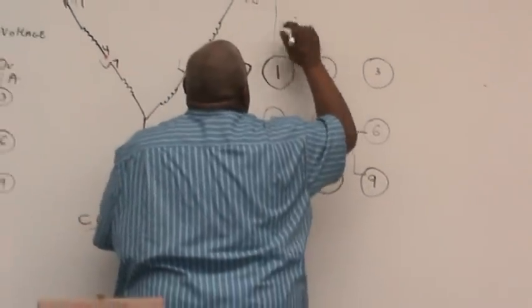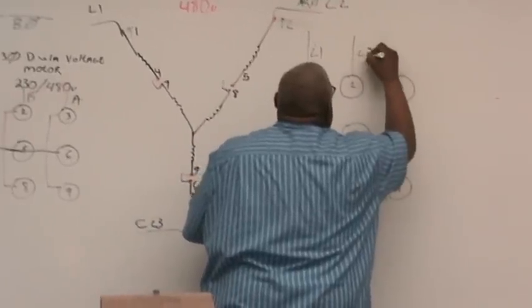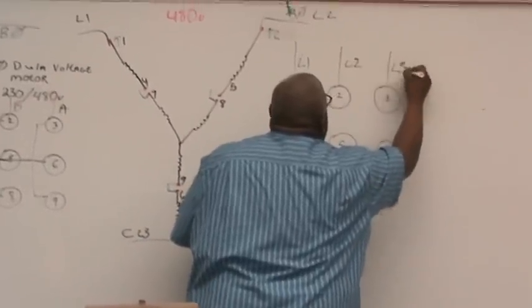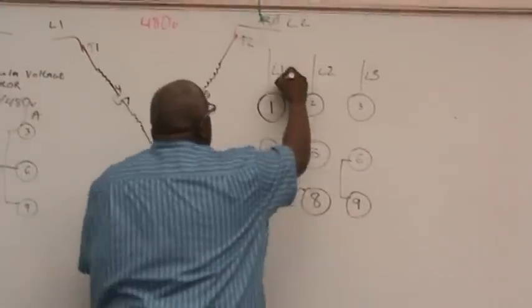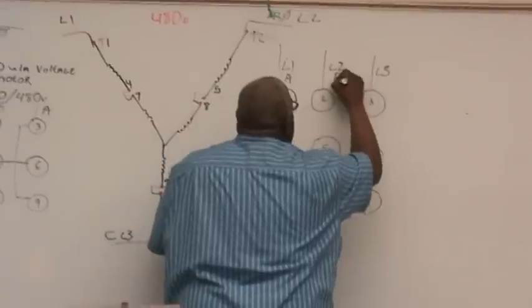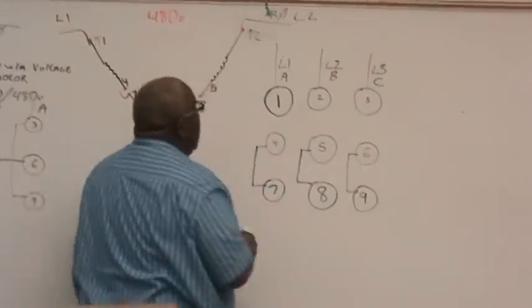T1 gets line one, line two, line three, or A, B, C for your high voltage.